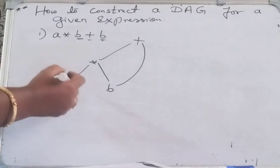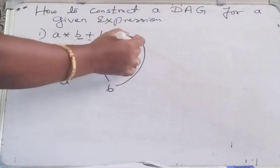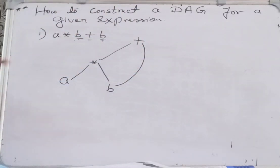So this is the meaning of this one: A star B plus B. So a node can have more than one parent. That is the meaning of this statement.